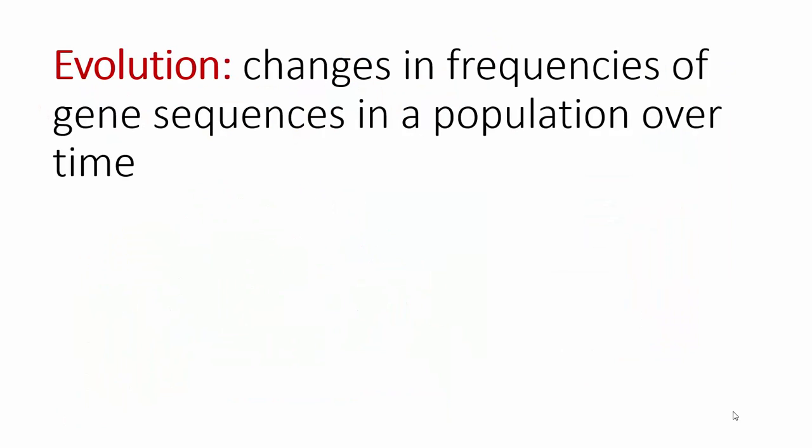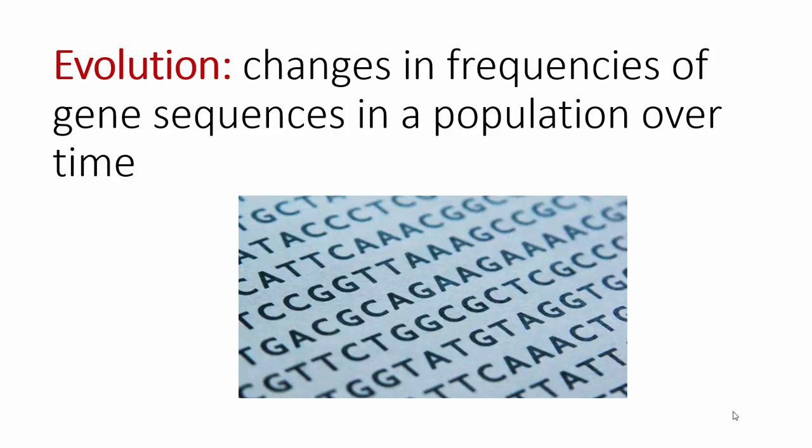What they would look for are changes in frequencies of gene sequences in a population. Gene sequences are the A's, C's, T's, and G's inside the DNA of each of our cells that act as sort of the recipe for the cells.